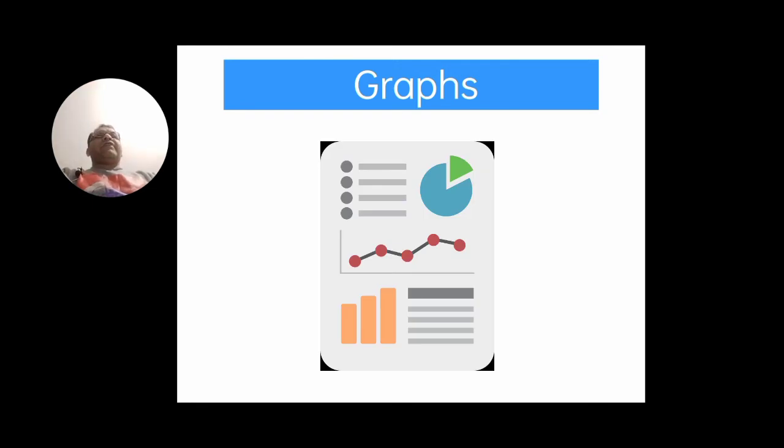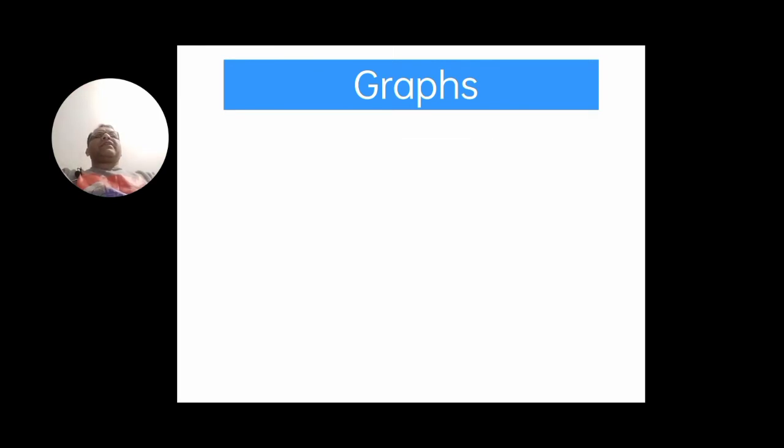Next is graphs. Use of graphs can be very handy for the learning of students. Pie charts and bar graphs can be used to show comparatives and superlatives. Through pie charts and bar graphs, a teacher can show population increase or decrease, the percentage of water on earth, and so on.